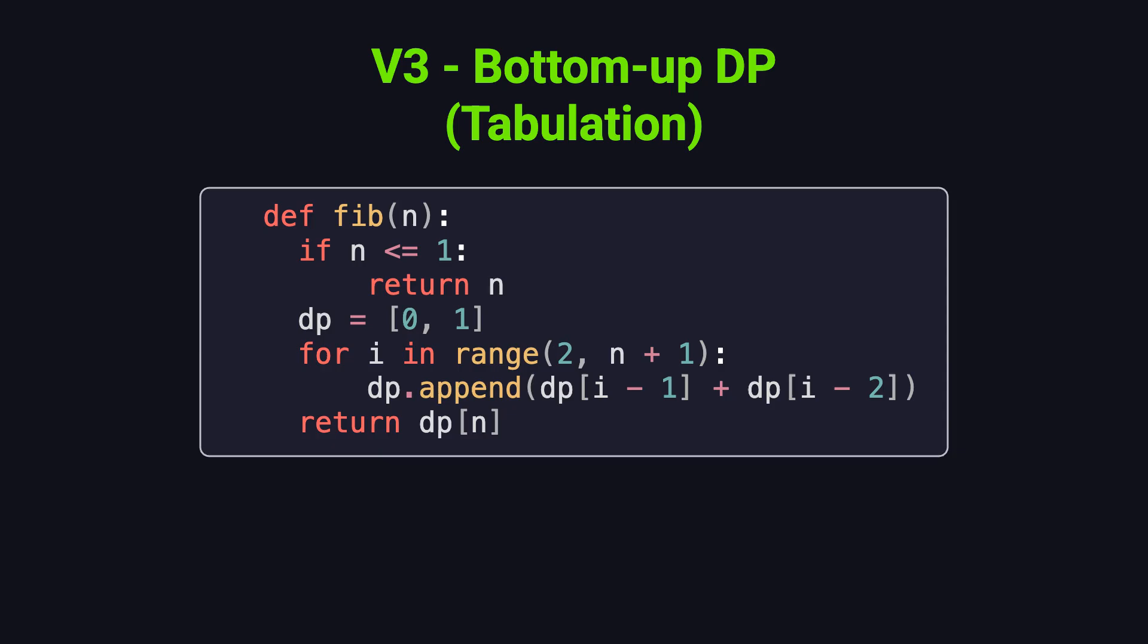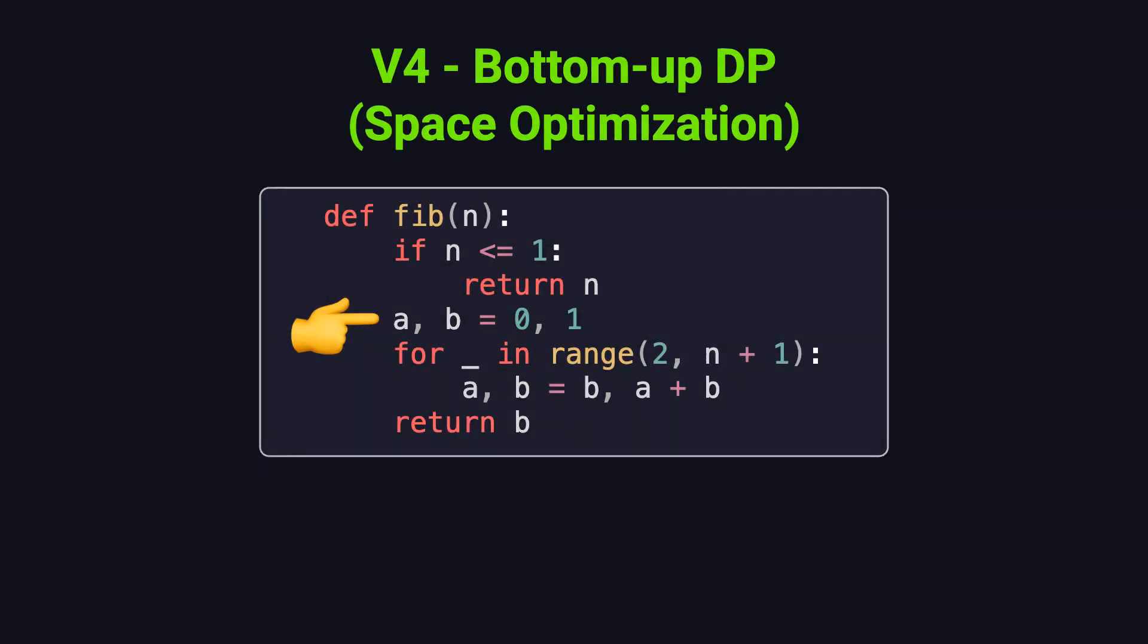And we can take it a step further, by optimizing the space. If you look closely, you'll notice that each new value only depends on the two before it. So instead of storing the whole array, we only need two variables to keep track of the last two results. With that, we still have O(n) time complexity, but we reduce space usage from O(n) to O(1), also known as constant space. In practice, this is the most efficient way to calculate Fibonacci numbers.